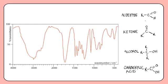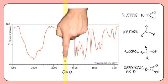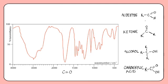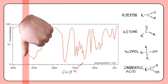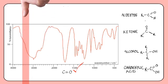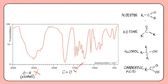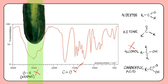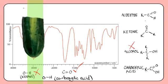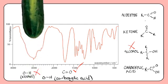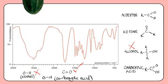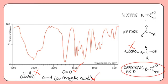Now let's try this compound. It does contain the finger and so there is a C double bond O carbonyl group present. The peak over here is too broad for an alcoholic OH. The cucumber peak corresponding to the OH of a carboxylic acid fits, and so the compound is therefore a carboxylic acid.